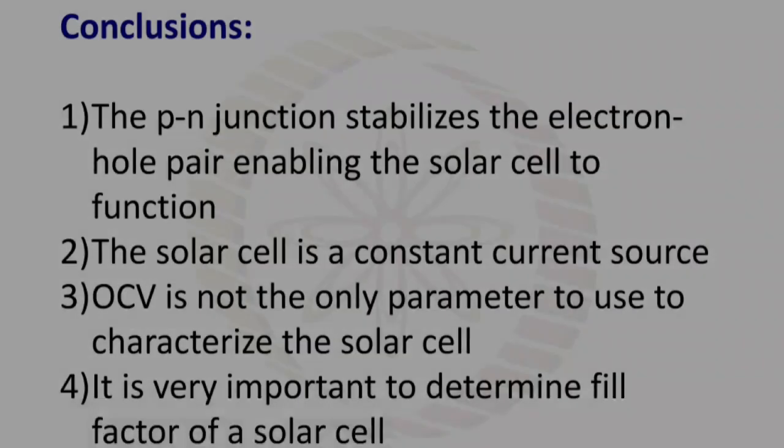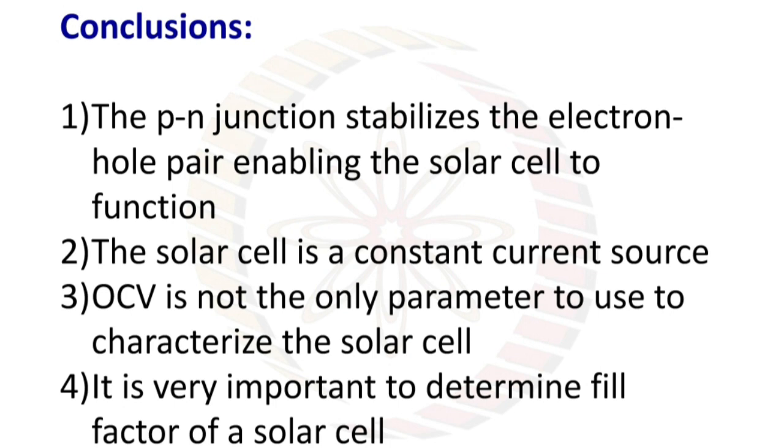There are some more conclusions: the P-N junction stabilizes the electron-hole pair, enabling the solar cell to function. The solar cell is a constant current source. Open circuit voltage is not the only parameter to characterize the solar cell. It is very important to determine fill factor of a solar cell. I'm going to speak some important key points from week 5. Listen to them very carefully.